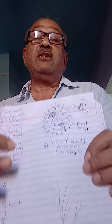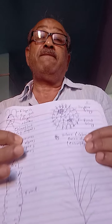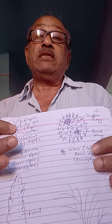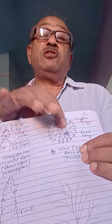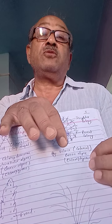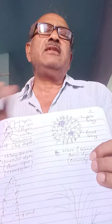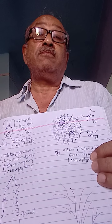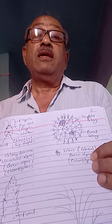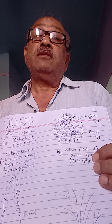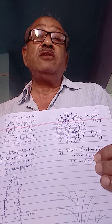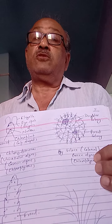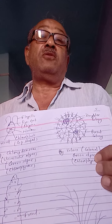These are the figures of different types of algae. This is unicellular algae, Chlamydomonas. This is colonial algae, Volvox. There is a term known as coenobium — a colony with a definite number of cells is known as coenobium. Example is Volvox.